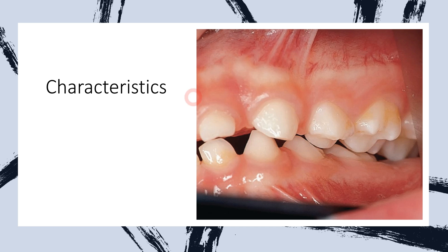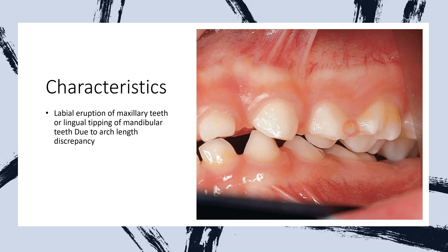If we talk about the characteristics of scissor bite, in this clinical picture you can appreciate that the maxillary molar is present completely buccal to the lower mandibular molar. The mandibular molar is present lingually and the maxillary molar is present completely buccal to it. This is the most important characteristic and defining feature we appreciate in cases of scissor bite. Another important thing to note is that there is arch length discrepancy, as the maxillary width is larger compared to mandibular width.